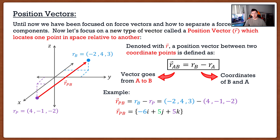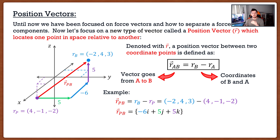Position vectors deal with distance, so this will have units of distance — meters, feet, whatever your unit system requires. What exactly do these components mean? When we drew that position vector, we drew it directly from the purple point to the blue point — the shortest possible distance. But you can take an alternative route that follows the axes. I went 5 units in the positive y direction, giving 5j; 6 units in the negative x direction, giving negative 6i; and 5 units in the positive z direction, giving 5k. This is exactly the same as force vectors — the only difference is we're dealing with units of distance instead of forces.